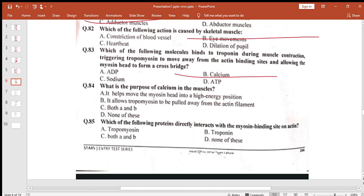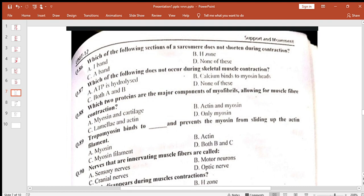What is the purpose of calcium in the muscle? It allows tropomyosin to pull away from the actin filament. Which of the following protein directly interacts with myosin binding site? Tropomyosin. Which section of sarcomere does not shorten during contraction? A band short nahi ho raha tha.